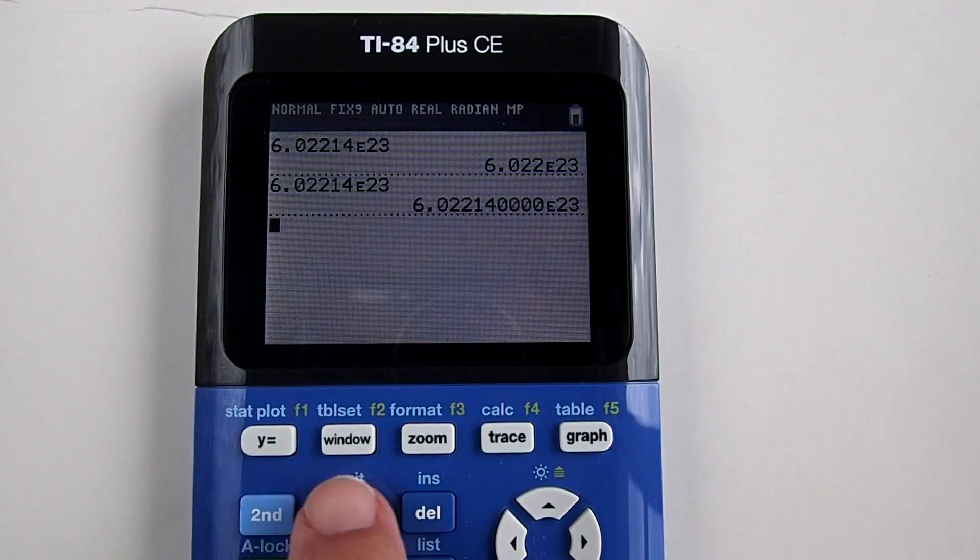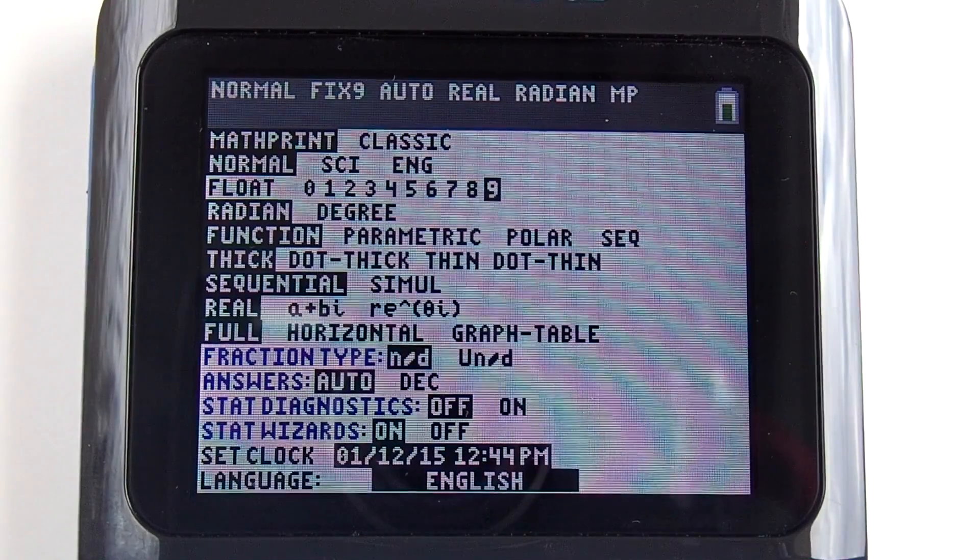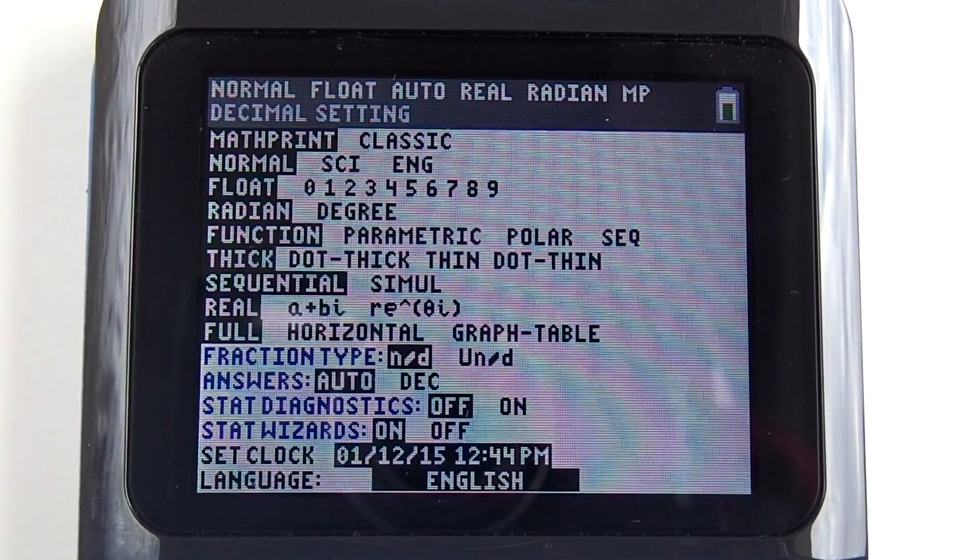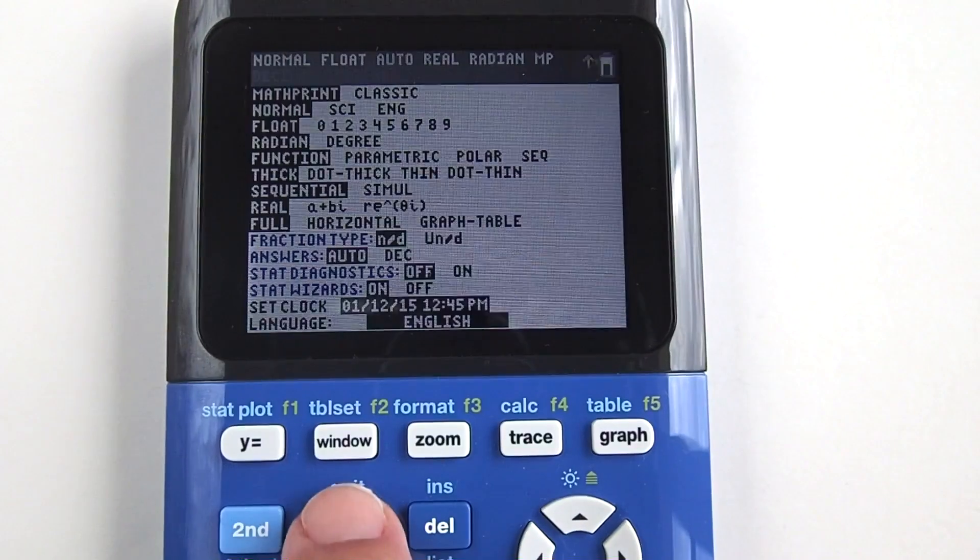Press the mode key. Go down to float and press enter. Notice that I did not choose a specific float number. Go back to the home screen, second mode.